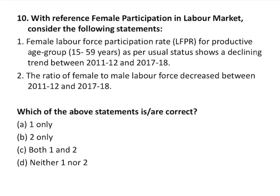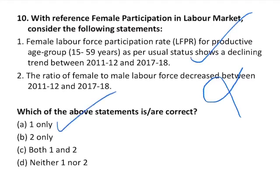The last question is on female participation in the labor market. The first statement says the female labor participation rate for the productive age group (15 to 59 years) under usual status shows a declining trend between 2001 and 2017-18 — this is correct as per the data. The second says the ratio of female to male labor force decreased between 2011 and 2017 — this appears true but is factually wrong per recent data. So only statement one is correct. That's all for today — please like and subscribe to the YouTube channel. Thank you.